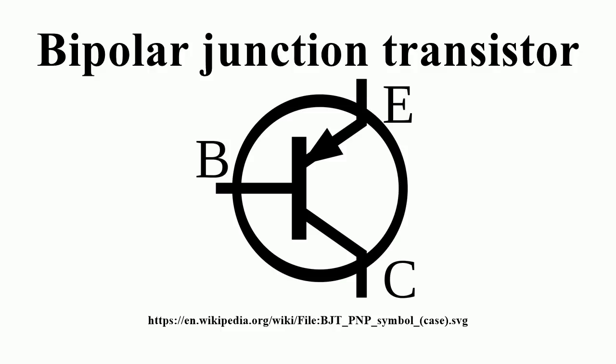The other type of BJT is the PNP, consisting of a layer of N-doped semiconductor between two layers of P-doped material. A small current leaving the base is amplified in the collector output. That is, a PNP transistor is on when its base is pulled low relative to the emitter. In a PNP transistor, the emitter-base region is forward biased, so an electric field and carriers will be generated. They should flow towards the base junction, but the base part is very thin and has low conductivity. The reverse biased collector-base part has generated holes, so due to the electric field, carriers or electrons get pulled by the holes.